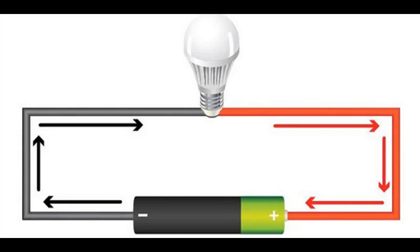They need some pushing energy to flow through the wire. That pushing energy is called voltage. Voltage is provided by the battery.